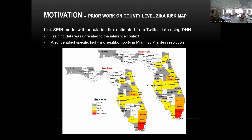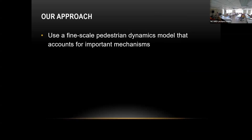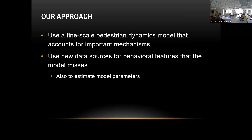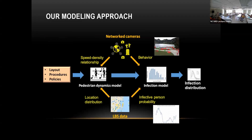Two of the three locations that actually turned out to be high-risk were identified. This is the motivation for combining emerging data with traditional models for pedestrian dynamics: we use the mechanistic pedestrian dynamics and infection model for main analysis, but for features that could be missed, we use other data sources.